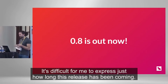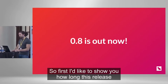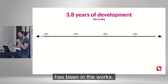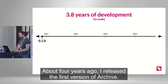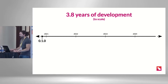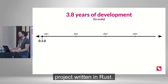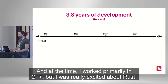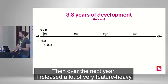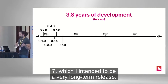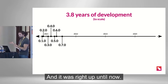It's kind of difficult for me to express just how long this release has been coming. So first I'd like to show you how long this release has been in the works. About four years ago, I released the first version of Archive. It was my first real open source project and my first major project written in Rust. At the time, I worked primarily in C++, but I was really excited about Rust. Then over the next year, I released a lot of very feature-heavy updates which eventually culminated in 0.7, which I intended to be a very long-term release. And it was, right up until now.